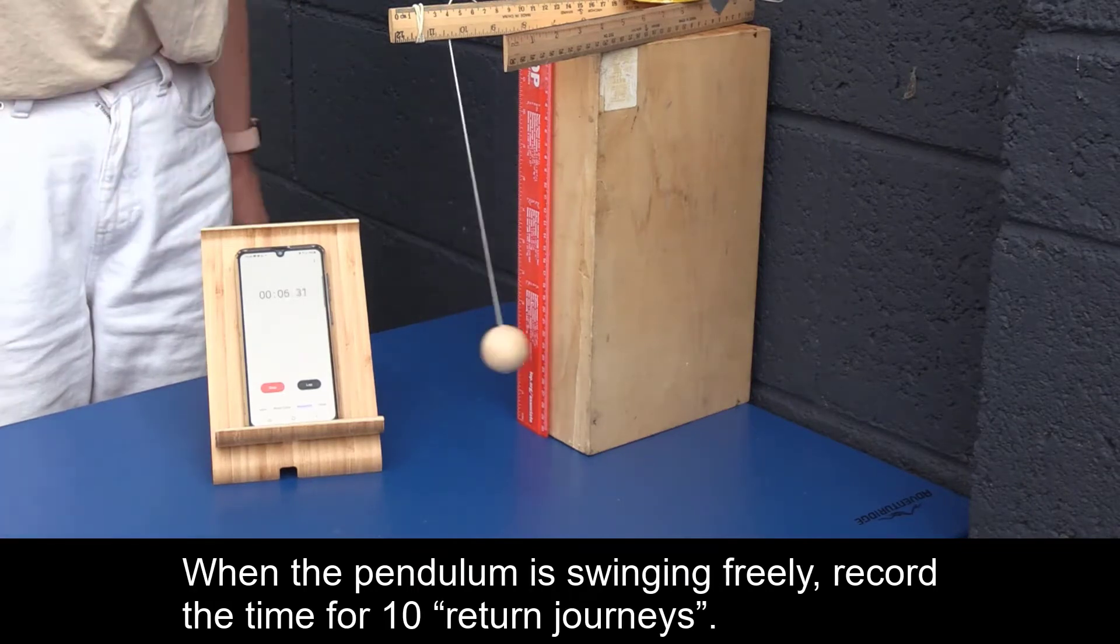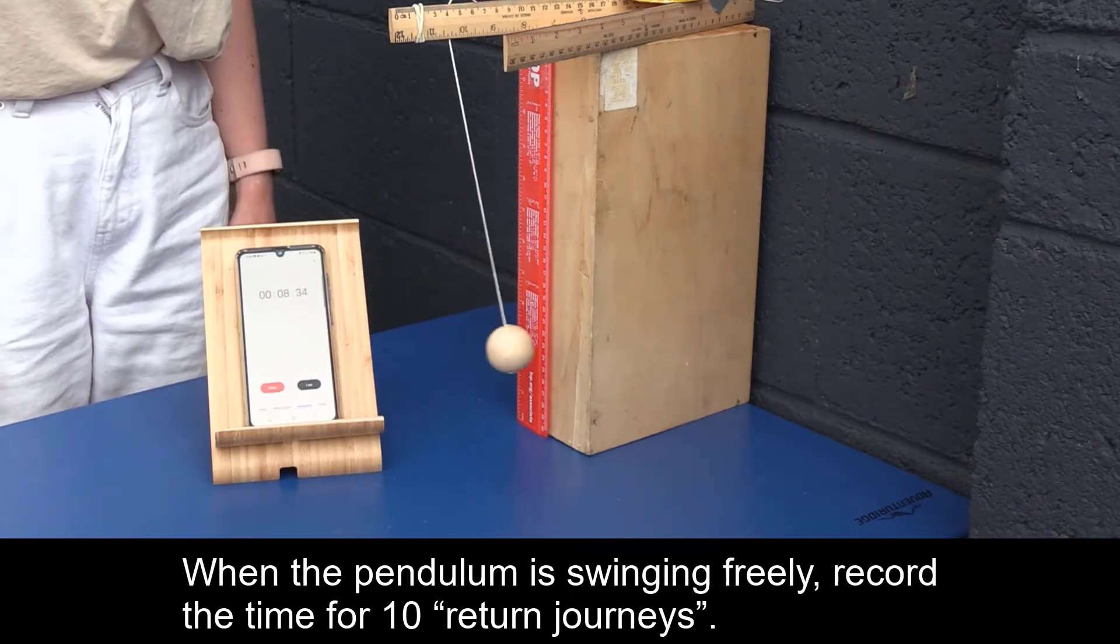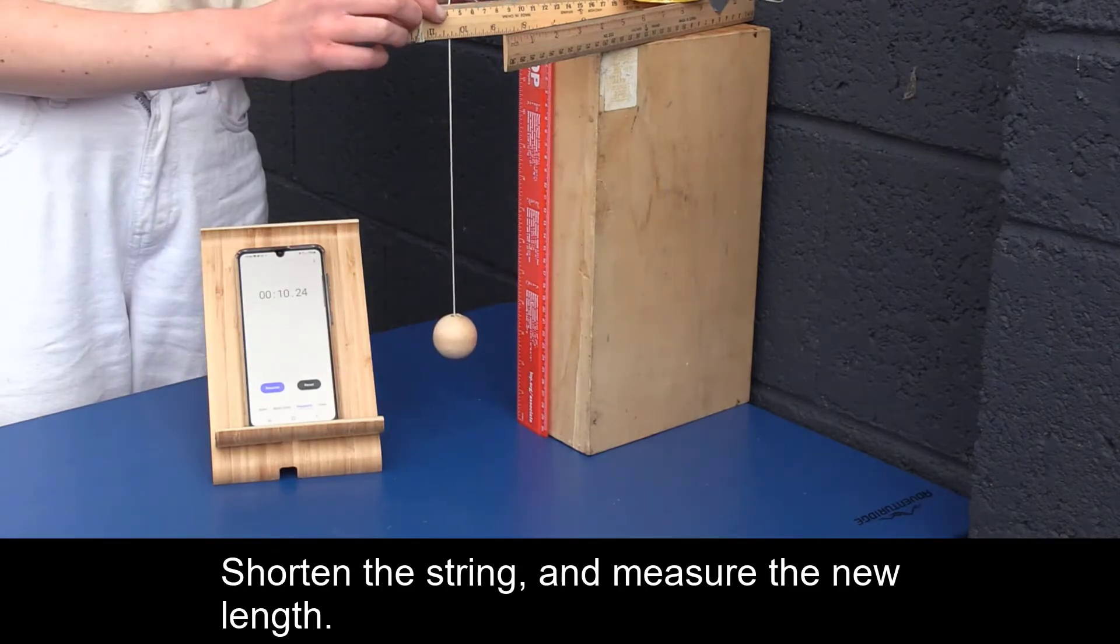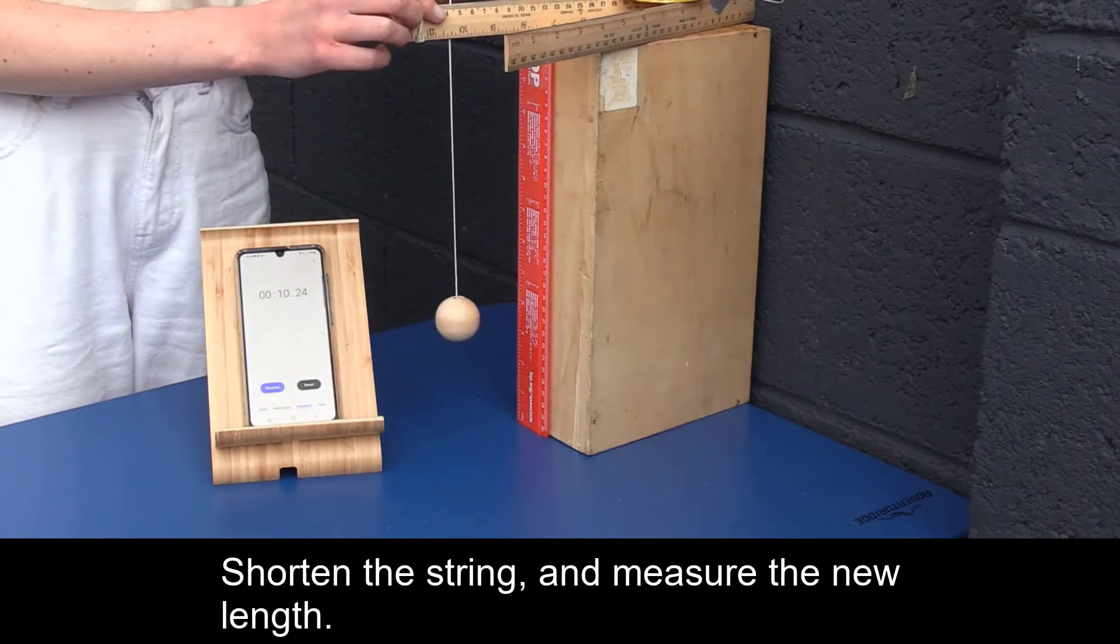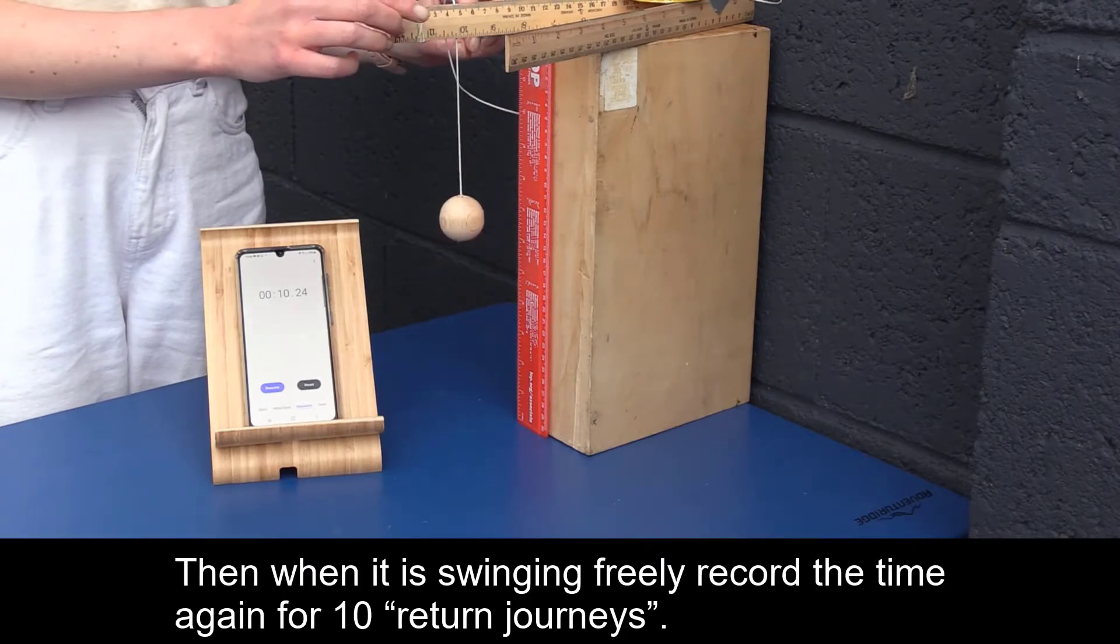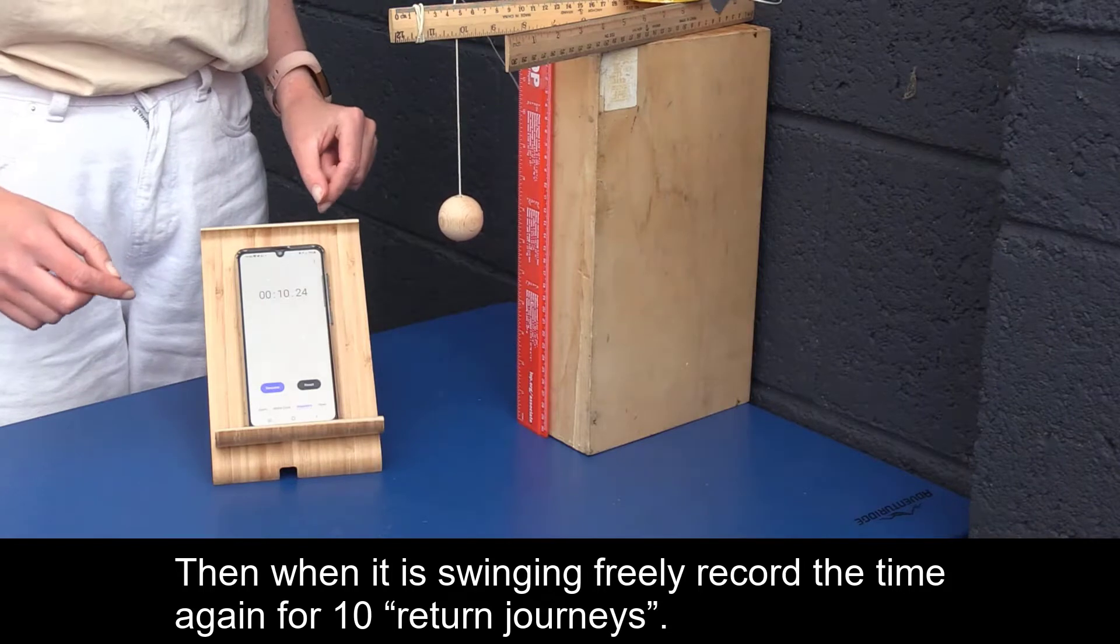When the pendulum is swinging freely, record the time for 10 return journeys. Shorten the string and measure the new length. Then, when it is swinging freely, record the time again for 10 return journeys.